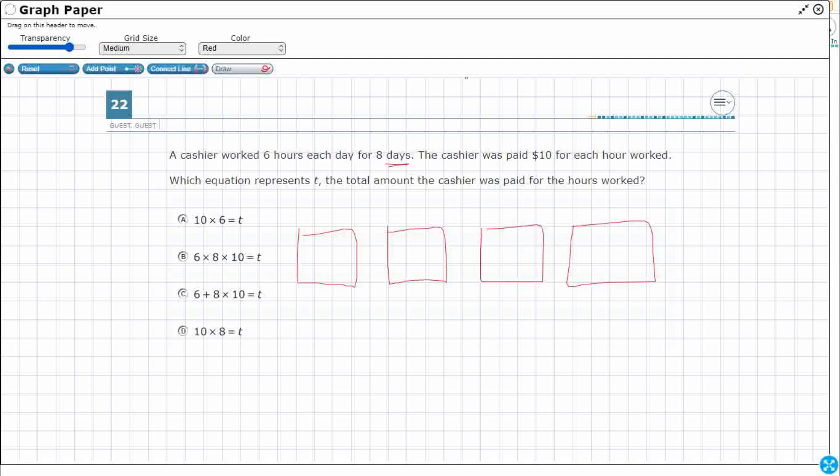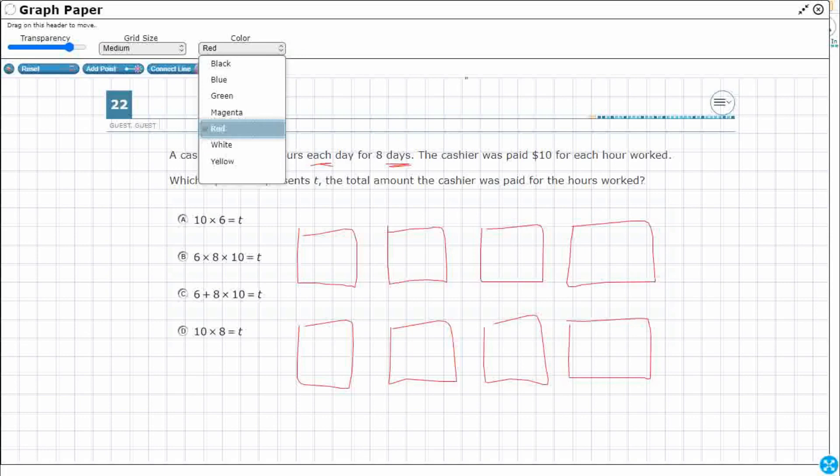Each of these boxes are going to represent a day. Okay, so day one, day two, day three, day four, day five, day six, day seven, day eight. When in doubt, draw a picture. Six hours each day. All right, so I'm going to just put a six inside each of these. So six, eight different times. So I've got six hours each day.